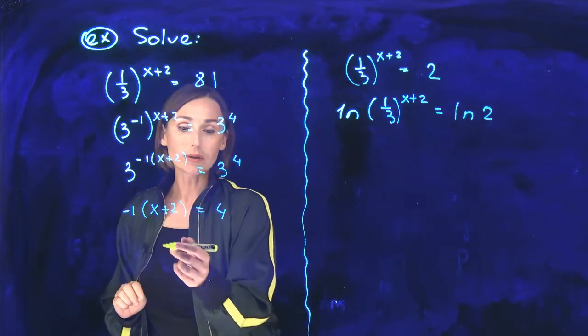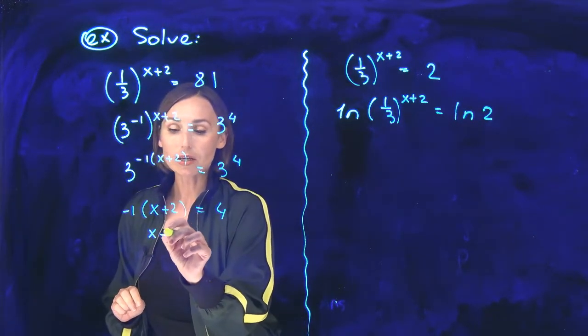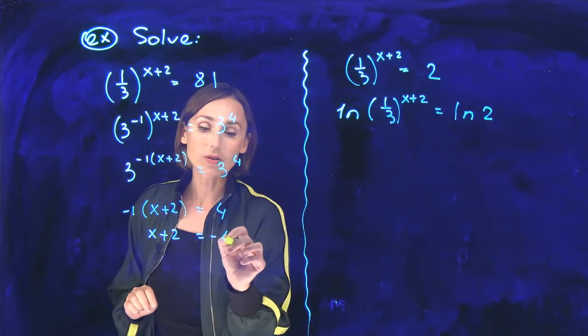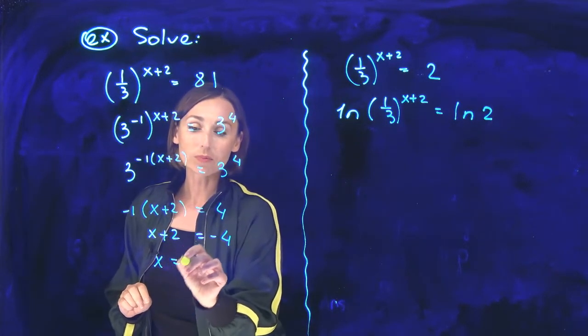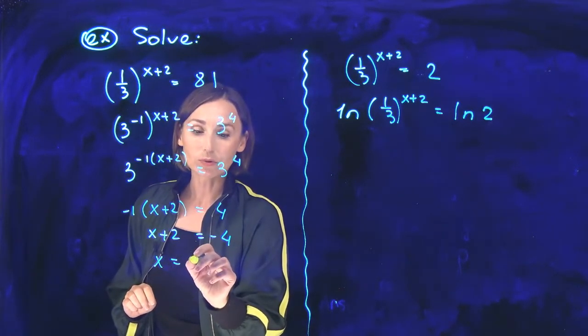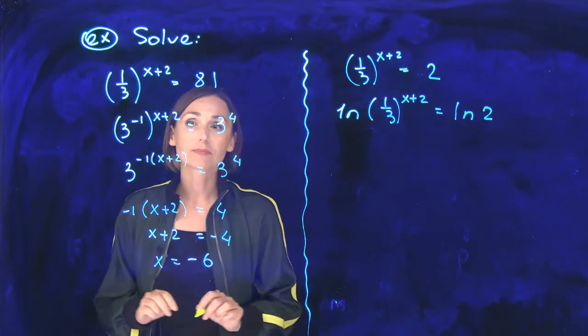Let's divide by negative 1, so I will get x plus 2 equals negative 4, and x will be negative 4 minus 2, which is negative 6. This is it.